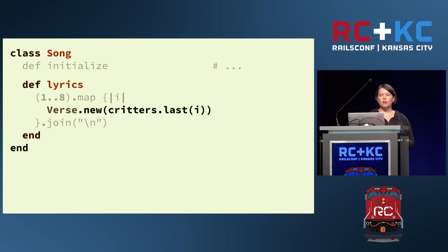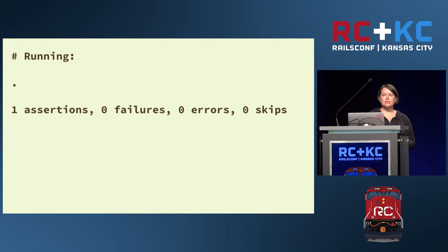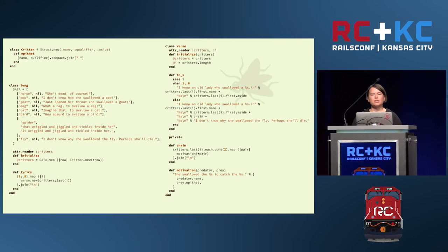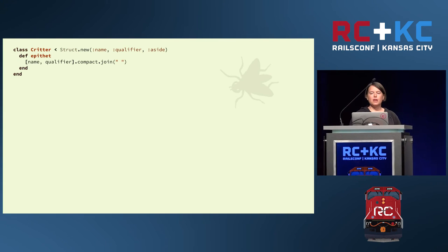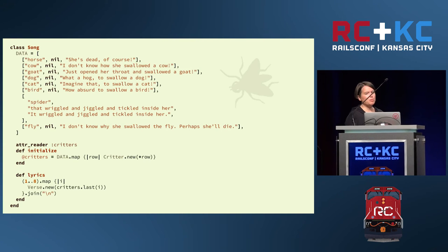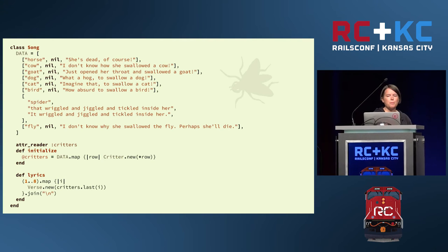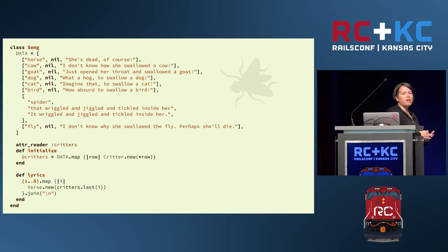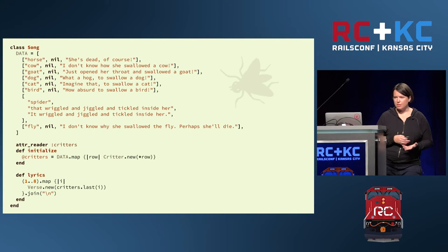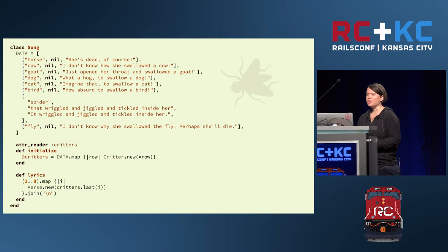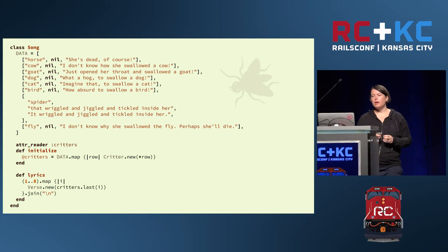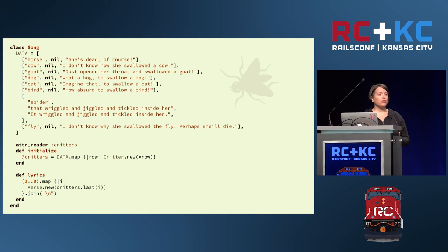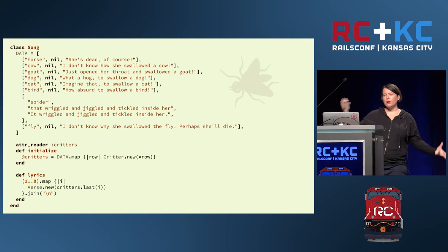Delete all the old methods — this passes the test. We now have three tiny objects, each focused and cohesive. The critter is minuscule — basically a tiny wrapper around the raw data. The song class is a little bigger; most of it consists of the array of critter data. This class knows: what the raw critter data is, how to transform it into critter objects, implicitly who eats whom in the food chain by the order of the raw data, how to instantiate verses, and how to combine verses into a complete song.